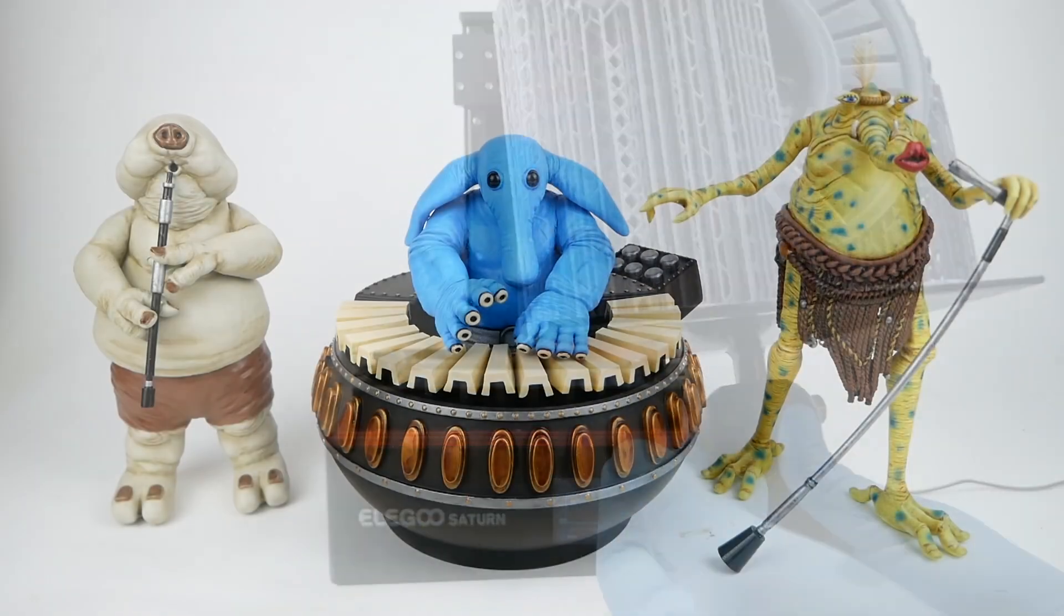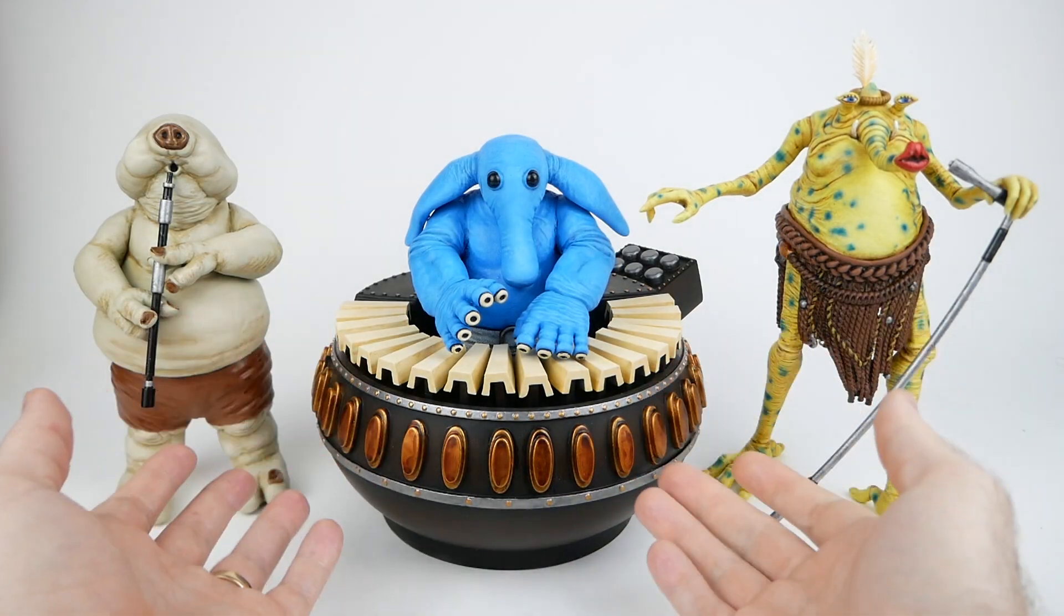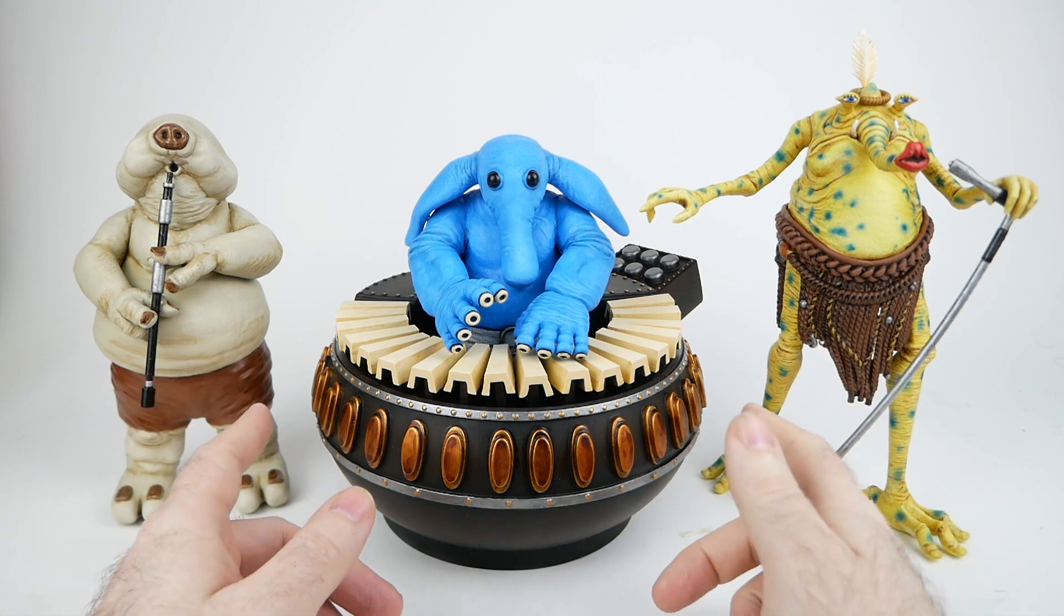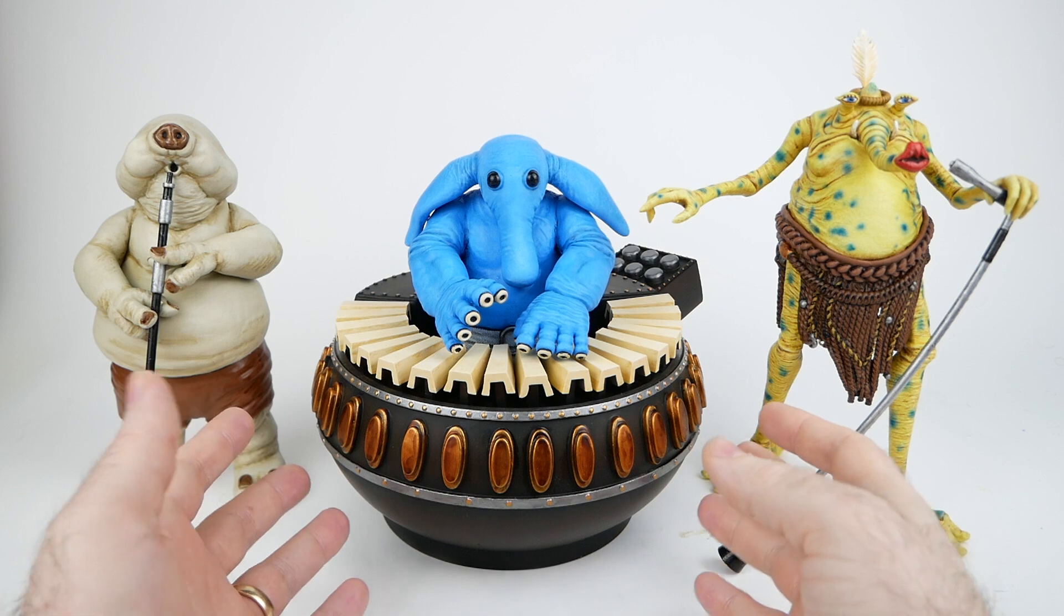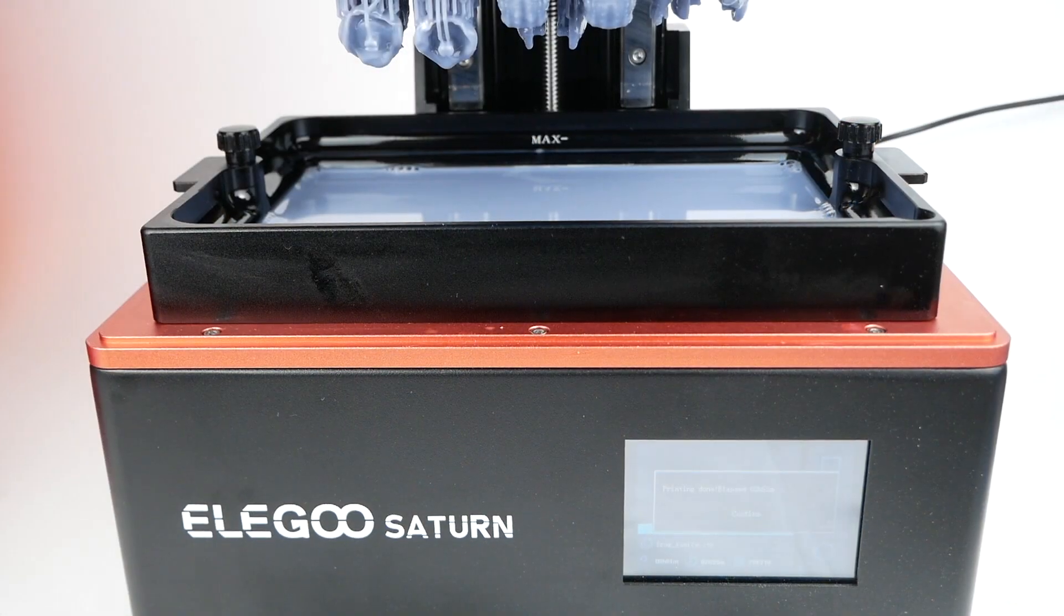To give you an idea what these look like when they're finished, this is my finished Max Rebo band, which I printed entirely on the Elegoo Saturn, and all of these just came out really well, I think.